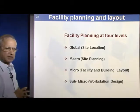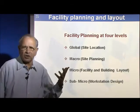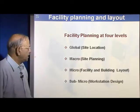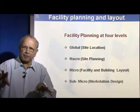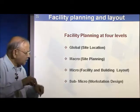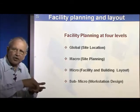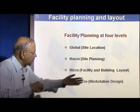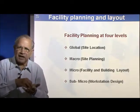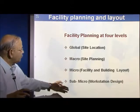Facility planning has four levels. At the global level, you decide whether to have the plant in China, Indonesia, India, or Mexico. Macro planning is within a country — within Mexico, Japan, or China, deciding a specific region or state. Micro planning involves deciding what type of buildings, exact location, type of machinery, and which department goes where. So facility planning has four distinct levels.